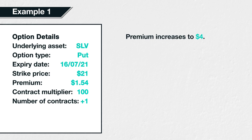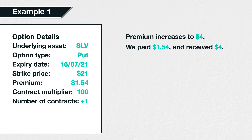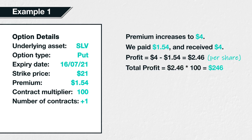Remember, a put option is the right to sell an asset, so when the price of the asset decreases, all other things being equal, the value of put options for that asset will increase. We've purchased this SLV $21 put option for $1.54, and a few days later it has increased in value to $4. We then decide to close the position before expiration by selling it for $4. The total profit would then be $4 minus $1.54, which equals $2.46. Remember though that the contract multiplier for SLV is 100. This calculation of $2.46 profit is per share. As the contract multiplier is 100, the total then is $2.46 multiplied by 100, which equals $246.